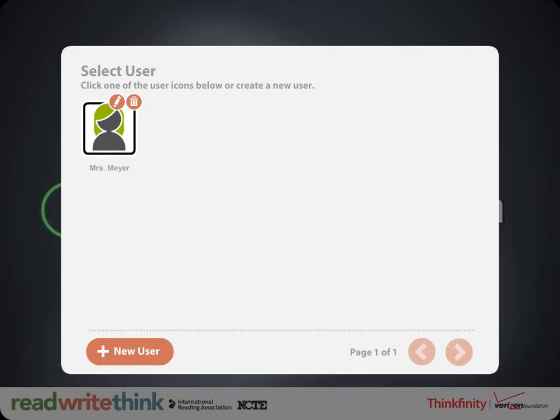You're going to hit this button down here at the bottom where it says new user and name it whatever you want. Once you have your new user, a little icon will show up. You get a chance to personalize your avatar or whatever you want to do. Once that's up and running, you hit that icon and away you go.